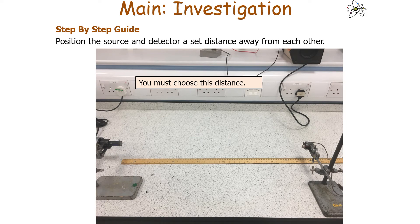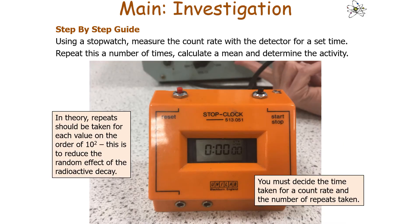Position the source and detector a set distance apart — you must choose this distance. Using a stopwatch, measure the count rate with the detector for a set time, then repeat this a number of times. Calculate the mean and determine the activity by dividing the count by the time taken. In theory, repeats should be taken on the order of 100 times to reduce the random effect of radioactive decay, but in a lesson you must decide a practical number of repeats.